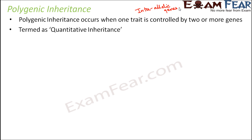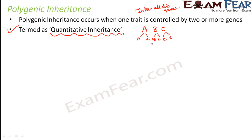This type of inheritance is also called quantitative inheritance. Let's take an example with three genes A, B, and C. Each of these genes has two alleles — one dominant and one recessive. When all dominant alleles capital A, capital B, and capital C are present, only then a particular trait is shown. As the number of genes increases, the cumulative effect also increases — that's why this is called quantitative inheritance.